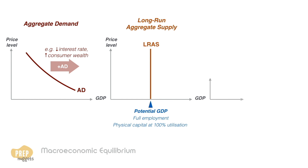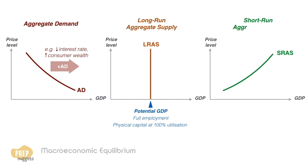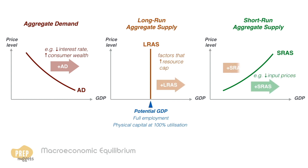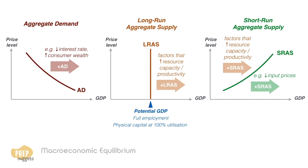The short-run aggregate supply curve is upward sloping. Certain factors like a change in input prices only affect the SRAS, while factors that affect the resource capacity or productivity of the economy will affect both the SRAS and LRAS. In this lesson, we examine the effects of shifts in the AD and SRAS curves on real GDP and the business cycle.